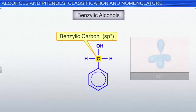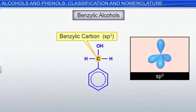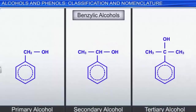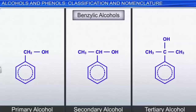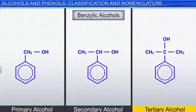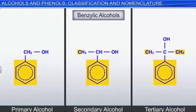A benzylic carbon has an sp3 hybridized carbon bonded to an aromatic ring. A benzylic alcohol has a hydroxyl group attached to a benzylic carbon. Benzylic alcohols can also be classified as primary, secondary, or tertiary alcohols depending on the number of carbon groups bonded to the benzylic carbon.